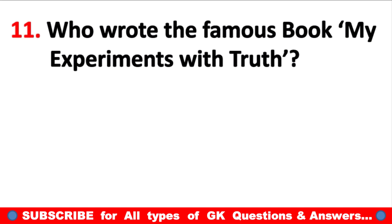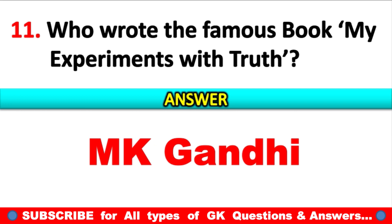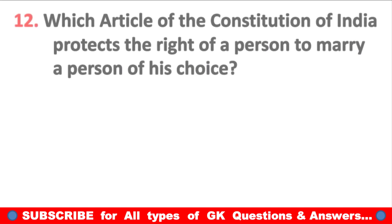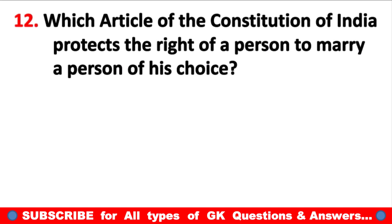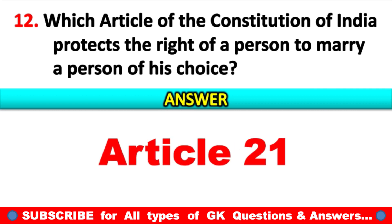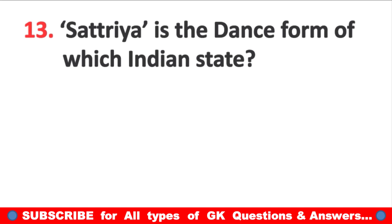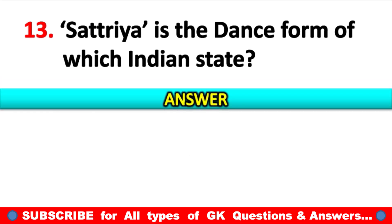Who wrote the famous book My Experiments with Truth? Answer: Mahatma Gandhi, full name Mohandas Karamchand Gandhi. Which article of the Constitution of India protects the right of a person to marry a person of his choice? Answer: Article 21. Satriya is the dance form of which Indian state? Answer: Assam.